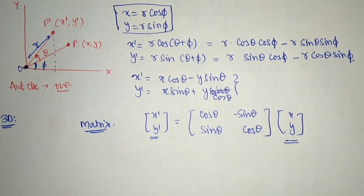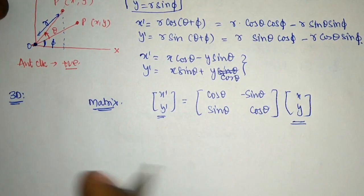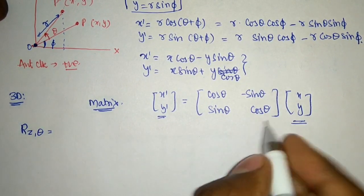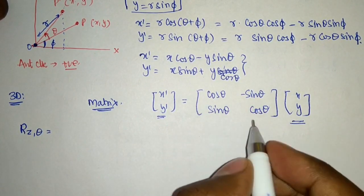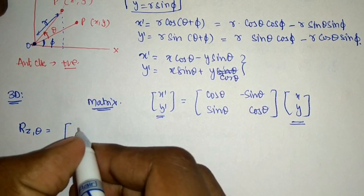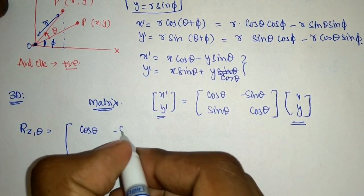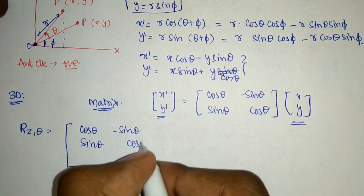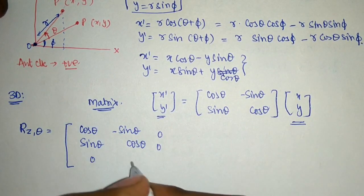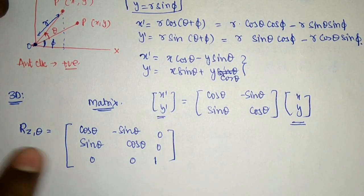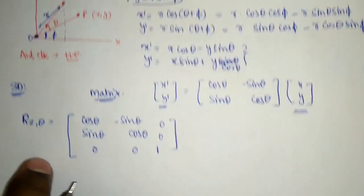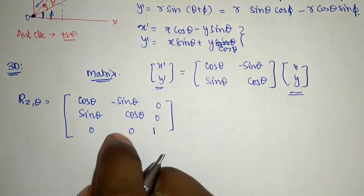In 3D, for rotation about the z-axis by angle theta, the matrix remains the same in the x-y block: [[cos theta, minus sin theta, 0], [sin theta, cos theta, 0], [0, 0, 1]]. That is the rotation matrix with respect to the z-axis, and we can remember it with the help of the two-dimensional rotation.